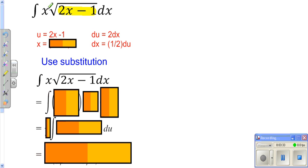But you notice, we do have an x hanging around. We don't have an x down here. So what we need to do is we need to solve this for x. We solve this for x, and so we're going to add 1, divide by 2. And so we get x to be u plus 1 over 2.